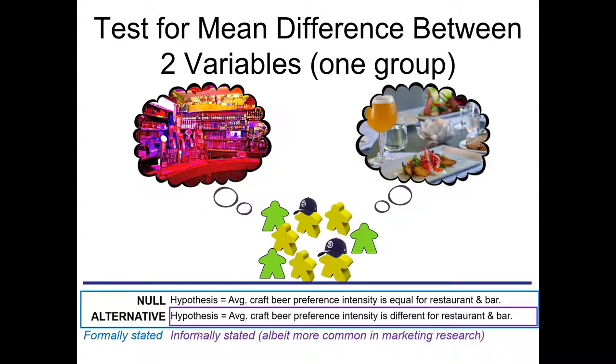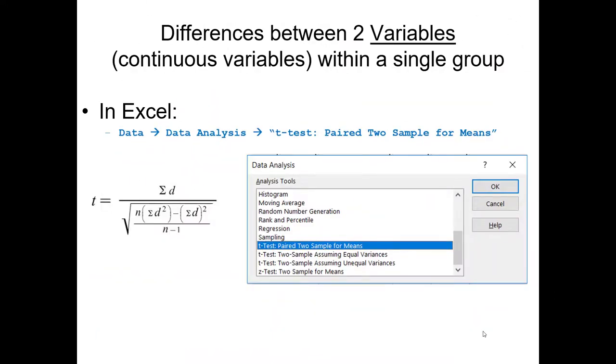As we're getting used to seeing, in applied marketing research contexts, people tend to take a more informal approach when articulating their hypothesis. The data analysis tool pack is what we're going to use to conduct the t-test. It's a paired two-sample for means test. Paired meaning the respondents are both in both of the groups, meaning they answer the same questions.